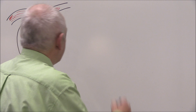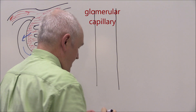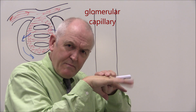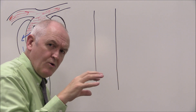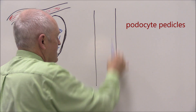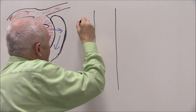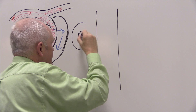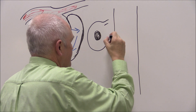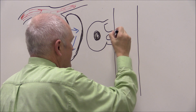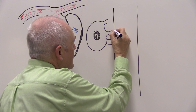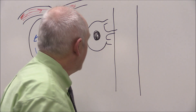Here we have the glomerular capillary. Now the podocytes always remind me of octopuses — you've got a middle bit and tentacles coming off — but the tentacles are called pedicles, the foot-like processes. So this is the glomerular capillary, looking at it from the outside. Here we have a podocyte with its nucleus, and the podocyte has got several branches coming off it. These branches are actually foot-like processes, the pedicles, and they're going to wrap themselves around the glomerular capillary.